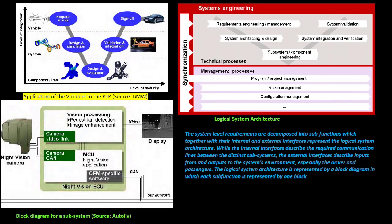The system level requirements are decomposed into sub-functions, which together with their internal and external interfaces represent the logical system architecture. While the internal interfaces describe the required communication lines between the distinct subsystems, the external interfaces describe inputs from and outputs to the system's environment, especially the driver and passengers. The logical system architecture is represented by a block diagram in which each sub-function is represented by one block.